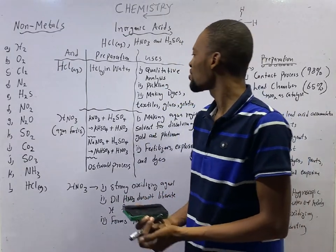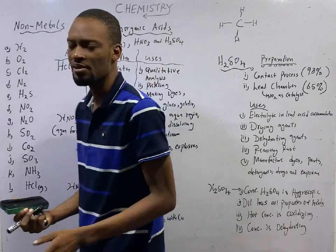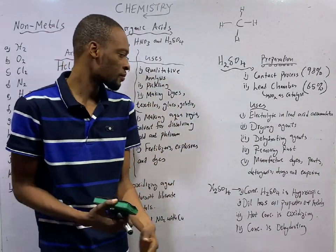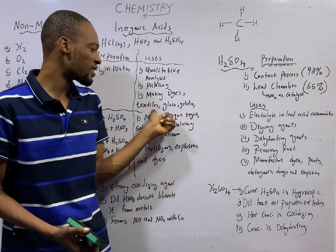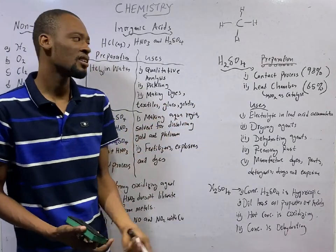HCl is used in pickling, that is, removing rust from metals. Hydrochloric acid is used in making dyes, textiles, glues, and gelatin.